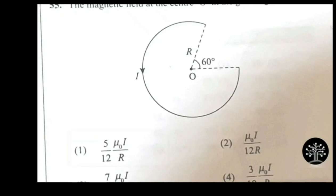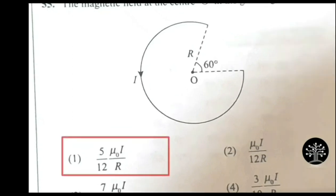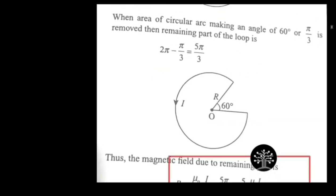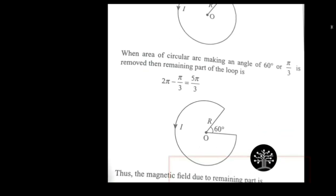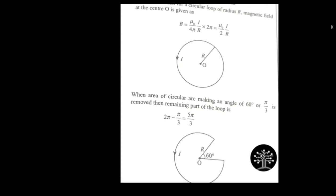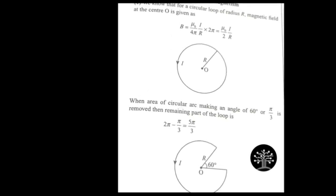So option A with 5 by 12 has the most probability of being correct. Let's verify: the correct answer is B equals mu-naught I over 4-pi by R, with final answer 5 by 12 times mu-naught I by R. We derived the correct answer without studying anything from the syllabus. Just a glance at the question and the answer is correct - that's how you gain marks using this method.